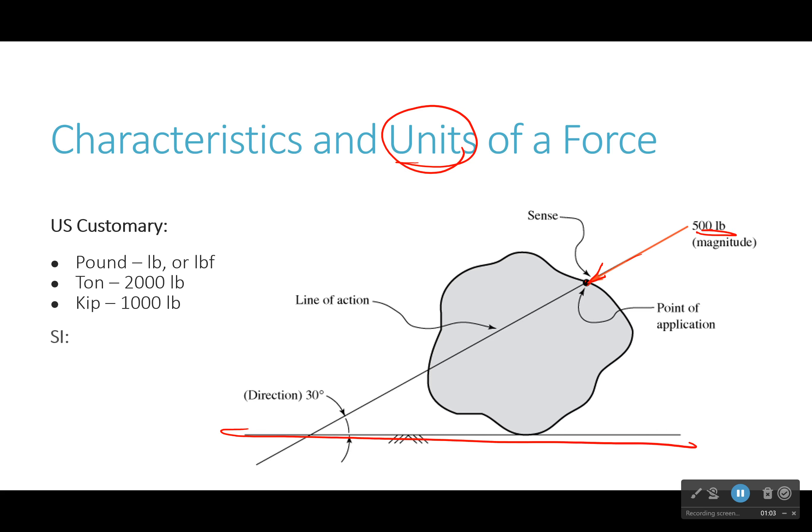Now what are the units of force? In the US customary system it's pound, which is abbreviated LB or sometimes LBF for pound force. We also use ton, which is 2,000 pounds, or kip, which is kilopound, that's 1,000 pounds.